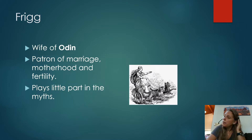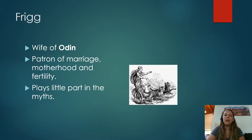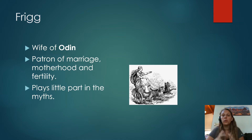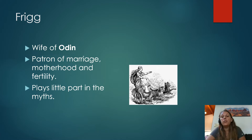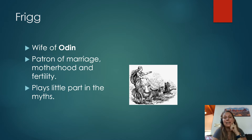Frigg — apart from being a way of not cussing in front of your parents — is Odin's wife. She's the patron of marriage, motherhood, and fertility. This is very similar to the Greek pantheon where Zeus is the head god and his wife Hera is patron of marriage and motherhood. Unlike Hera, though, Frigg has very little place in these myths. She did have a chariot pulled by cats, which is interesting and odd, to say the least.